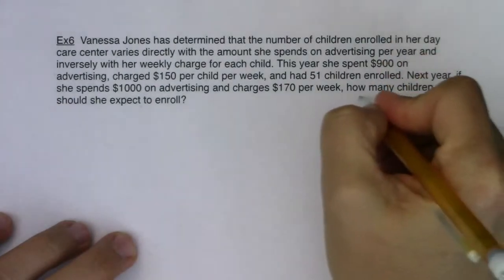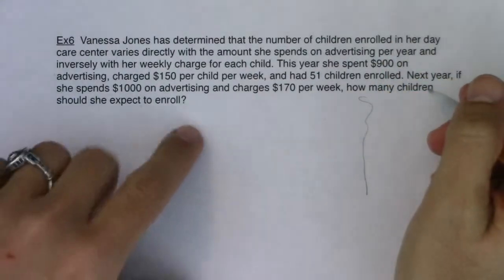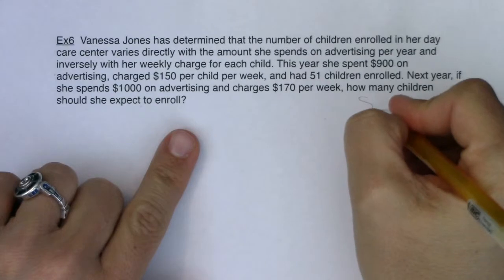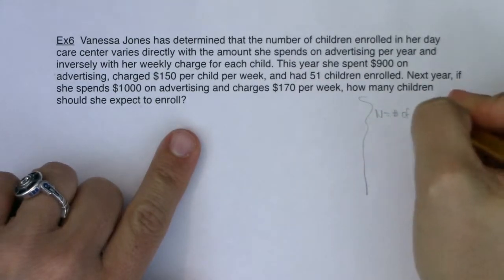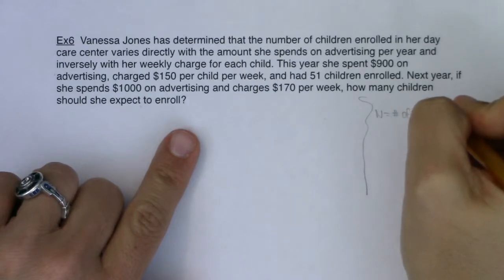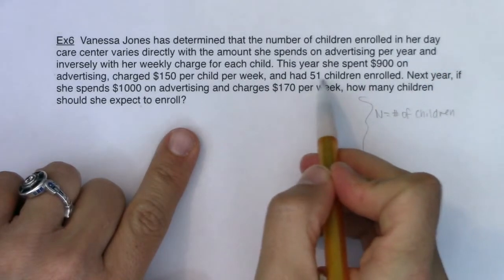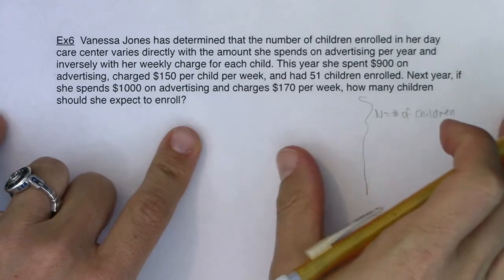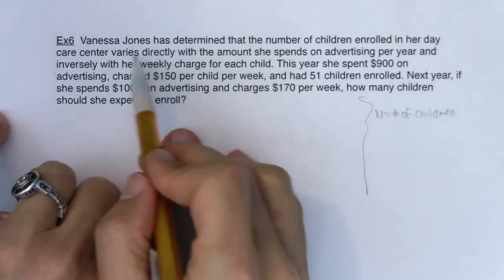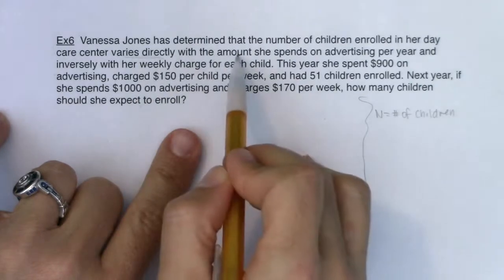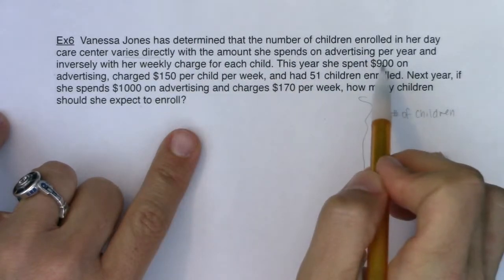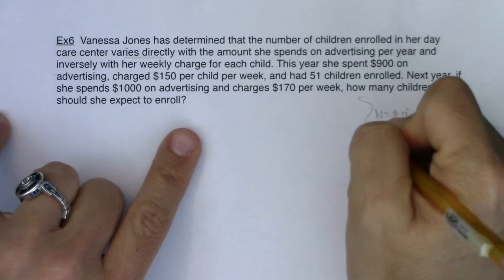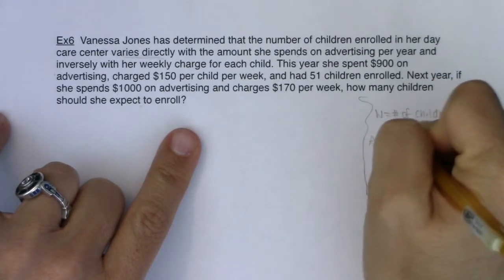Let's write down what our variables are. The first thing I noticed was 'number of children' paired with 'varies directly,' so I'm going to call n the number of children in this daycare. I can see the units — there are 51 children — and then it asks how many children. Then I saw 'varies directly' followed by 'amount she spends on advertising,' with a $900 budget and a $1,000 budget, so I'll call a our advertising budget.